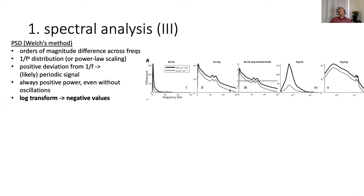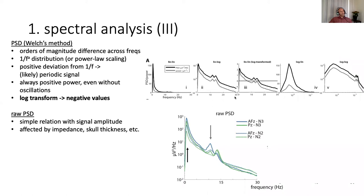We typically take a positive deviation from that background 1 over f activity as a signal that there might be some periodic activity going on in your time domain signal. Now it's also important to mention that power is always positive, even if there's no oscillatory or rhythmic behavior in the time domain signal. You sometimes see people mention beta or gamma oscillations, but based on a power spectrum like this where there's essentially a flat line in the beta range, that's better described as beta power rather than beta oscillation.